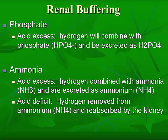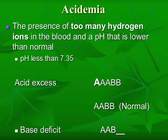With phosphate, in a situation of acid excess, the hydrogen will combine with phosphate (HPO4) and excrete it as H2PO4. If ammonia is part of the problem in an acid excess situation, the hydrogen combines with ammonia (NH3) and excretes it as ammonium (NH4), and bicarb is generated from there. If we have an acid deficit, the hydrogen is removed from the NH4 and reabsorbed by the kidney, and that helps keep things in balance.